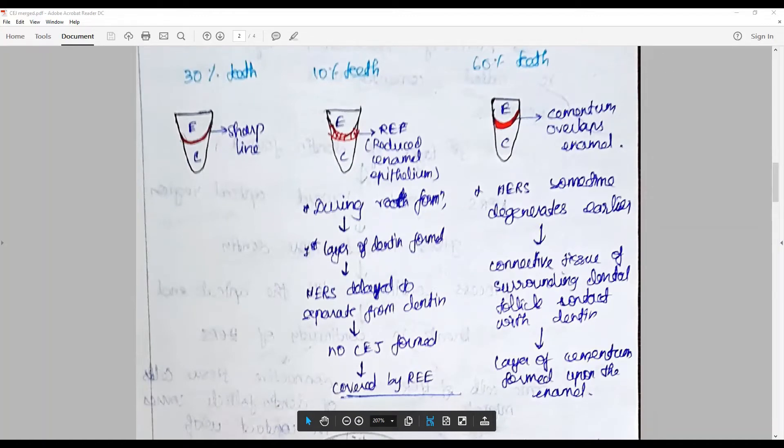How cementum overlaps enamel in 60 percentages: the HERS often degenerates a little bit earlier, exposing the underlying newly formed dentine to the surrounding dental sacs or the ectomesenchymal tissues. This facilitates the early formation of the first layer of cementum over the enamel, and that is the reason why 60 percentage of the tooth have cementum overlapping enamel.